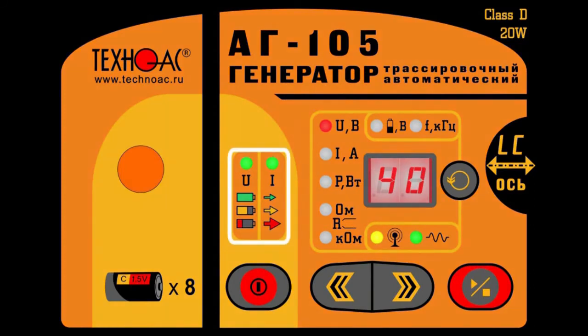The digital indicator shows the following values: voltage in the U section and relative battery status. The I indicator shows the intensity of consumed electric current. Internal parameter fields indicate power voltage in volts and frequency of generated signal in kHz.